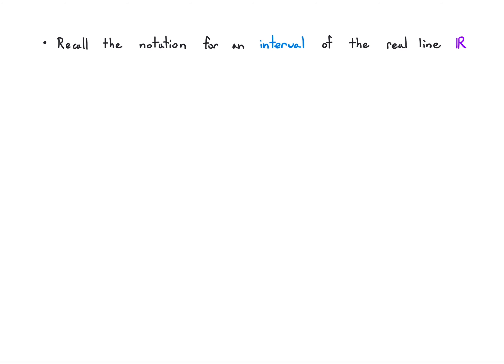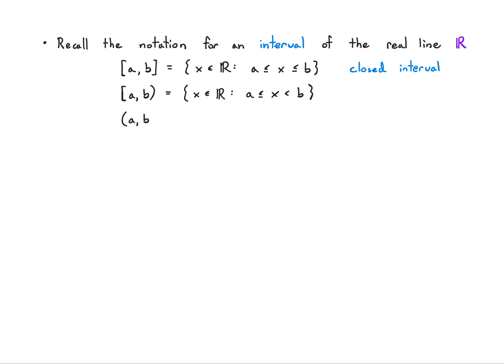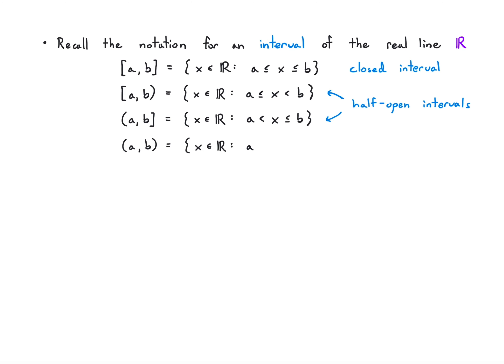Let's recall the notation for an interval of the real line. With square brackets, [A, B], these are the numbers that fall between A and B inclusive — less than or equal to on both sides. This is a closed interval. I can also leave off one endpoint, giving a strict inequality on that side — these are called half-open intervals. And I could leave off both endpoints with parentheses, (A, B), giving strict inequalities on both sides — an open interval. This is notation you've definitely seen before.